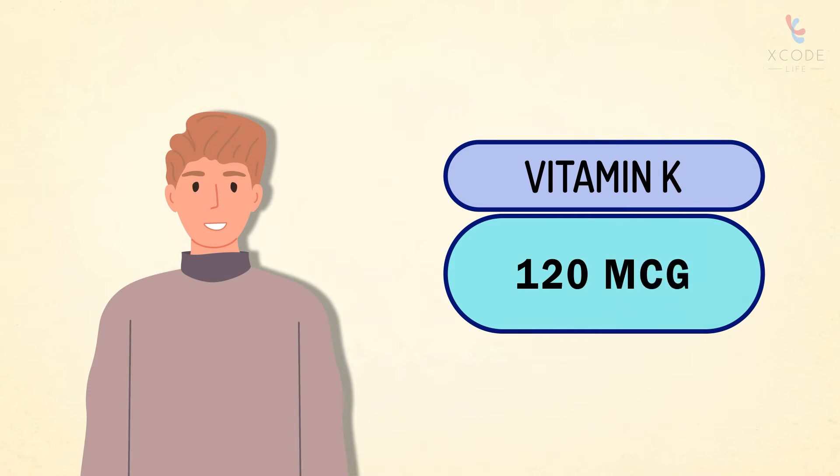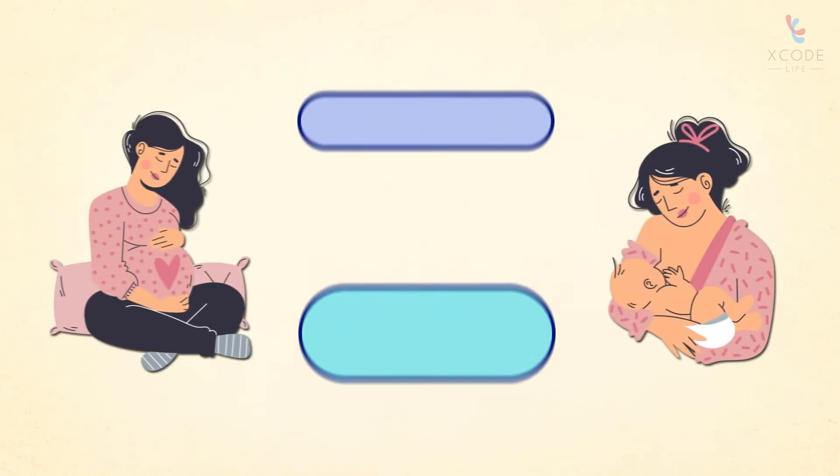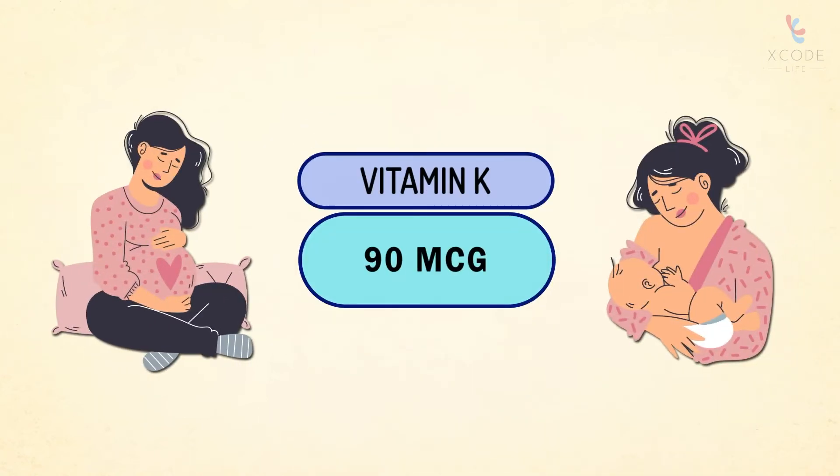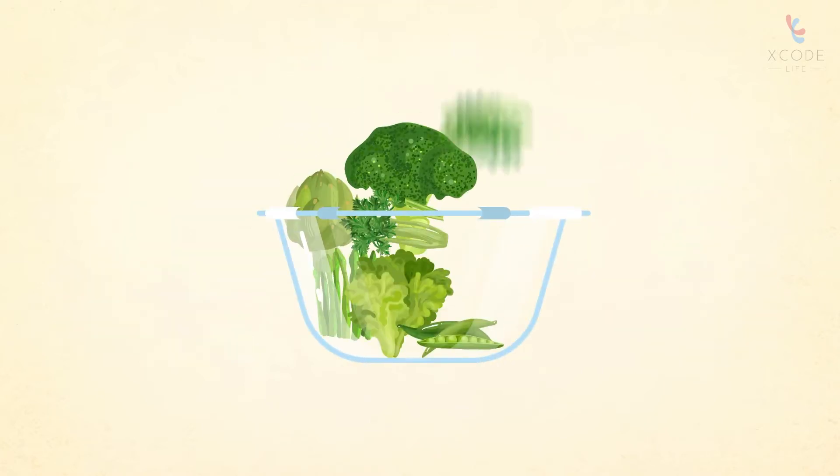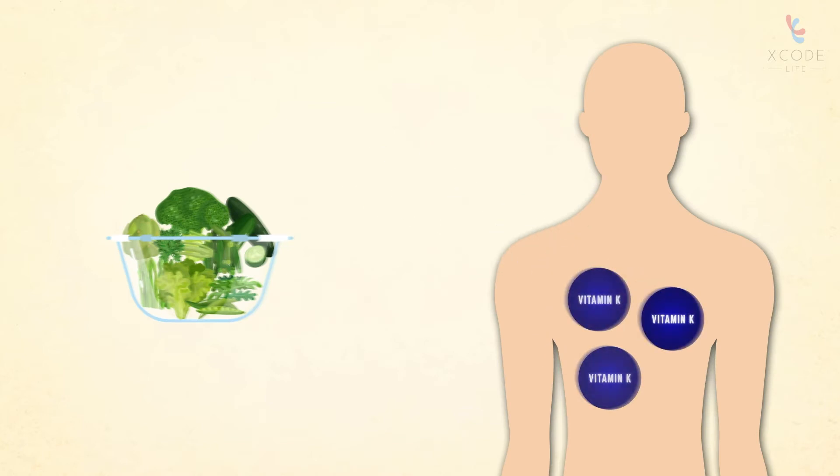The daily requirement of vitamin K for adult men is 120 micrograms, and for women it's 90 micrograms. Pregnant and lactating women also require 90 micrograms. A cup of dark green vegetables is typically sufficient to meet your daily requirements of vitamin K.